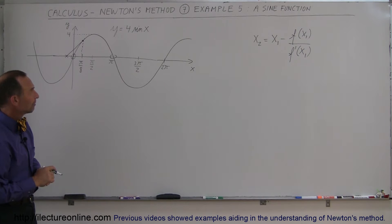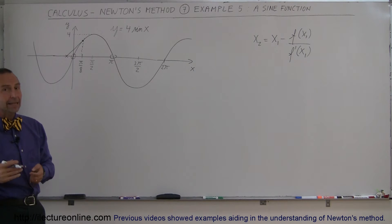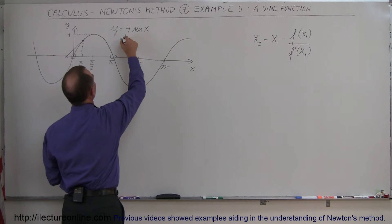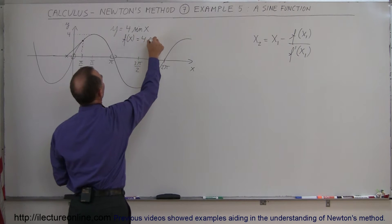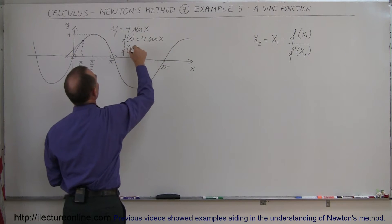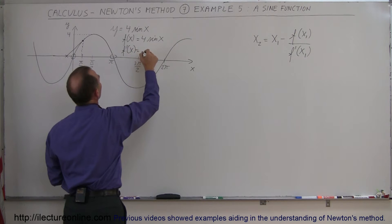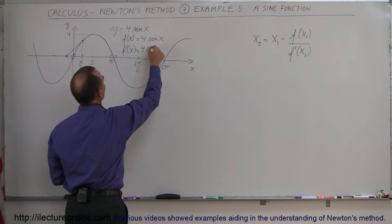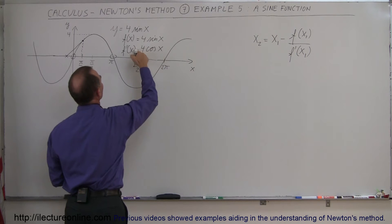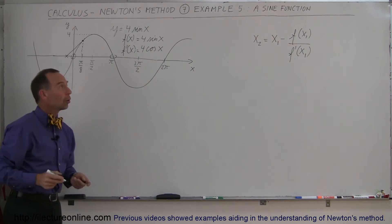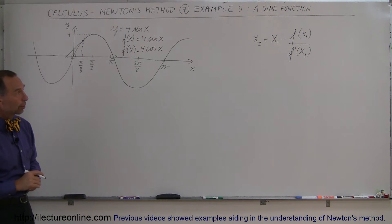To do that, we need to find the derivative of the function as well. We can say that f(x) is equal to 4 times the sine of x, and then the derivative f'(x) is equal to the derivative of sine, which is cosine, so it'll be 4 times the cosine of x. Let's go ahead and see if we can make this work.